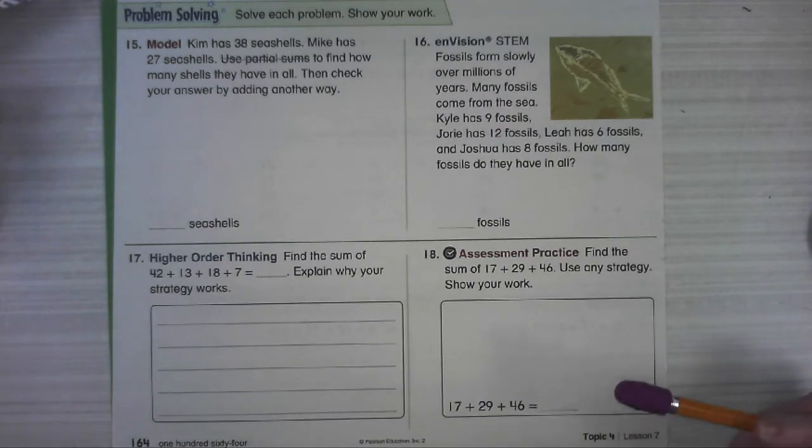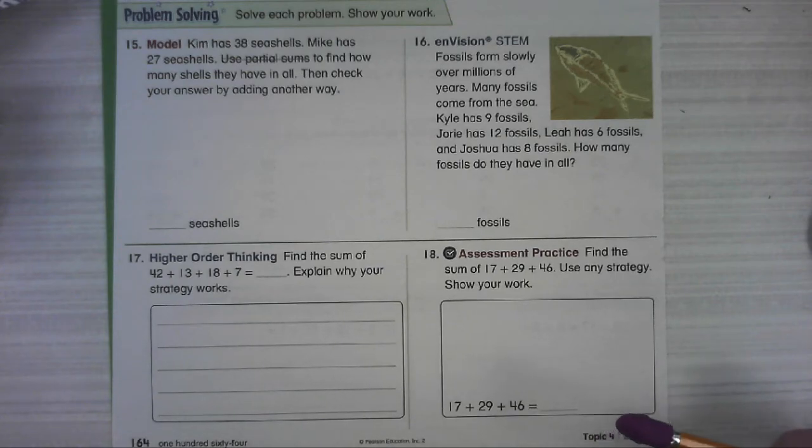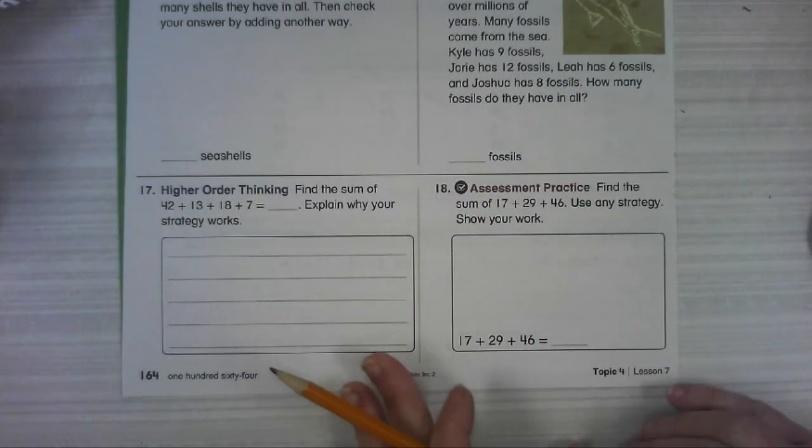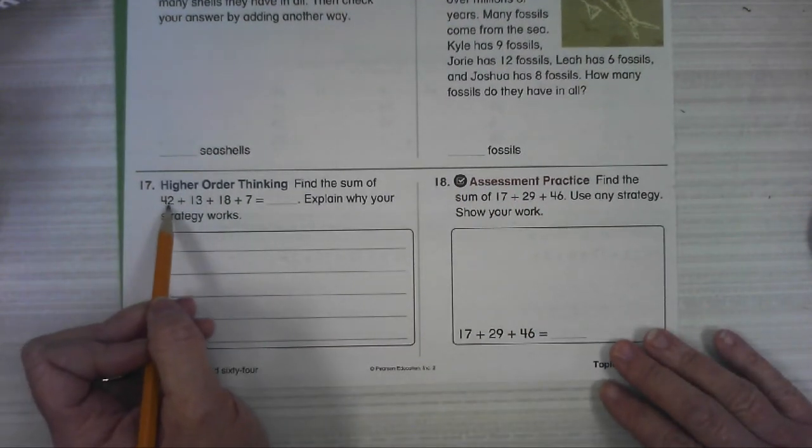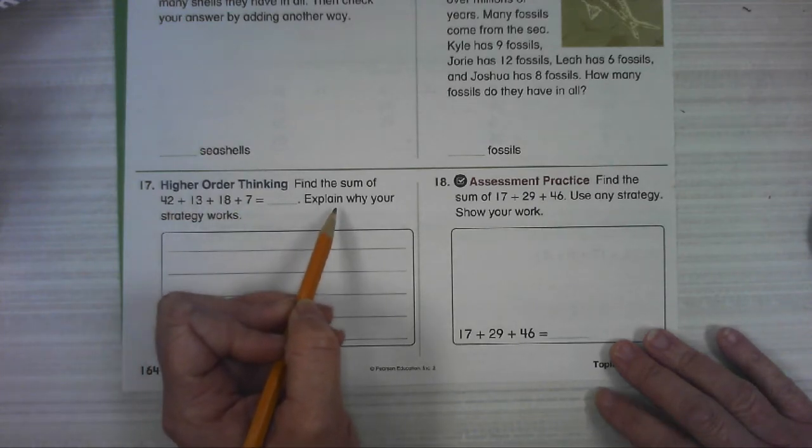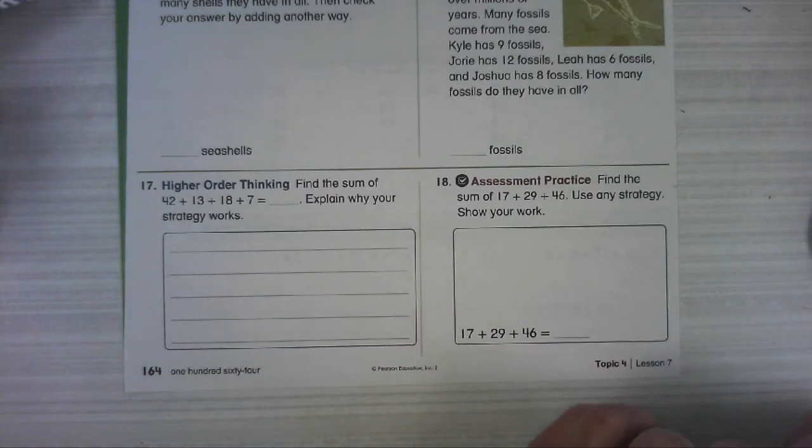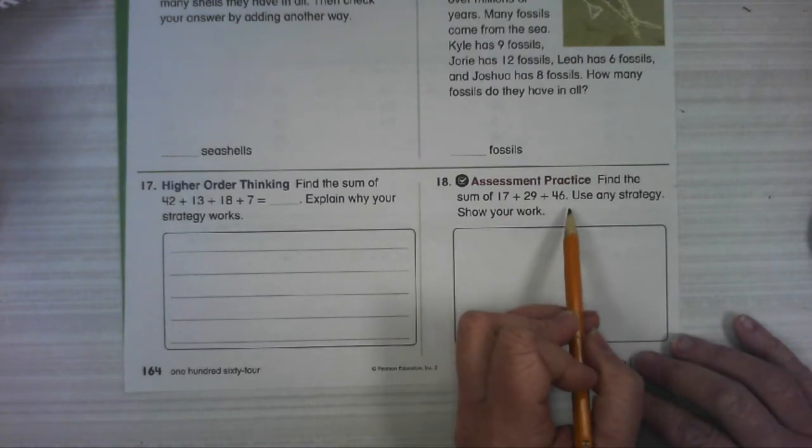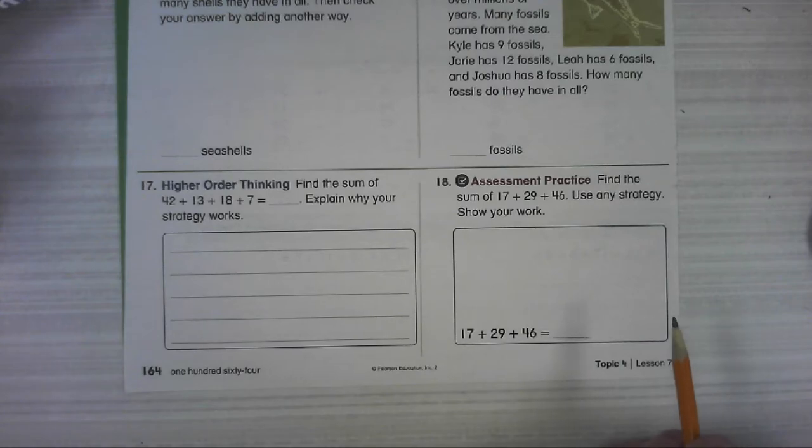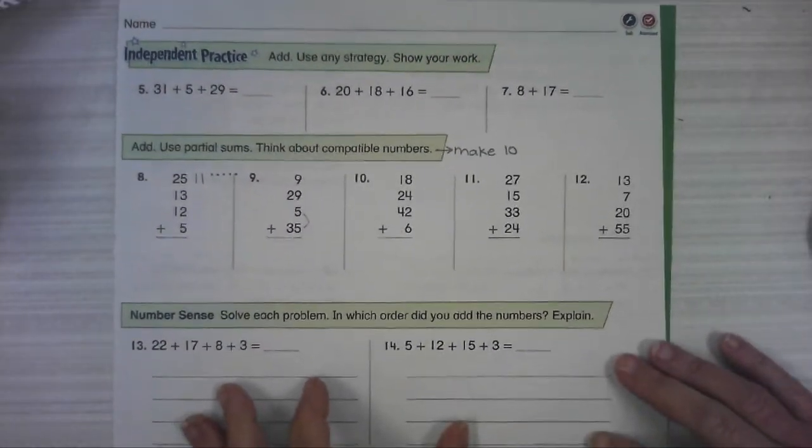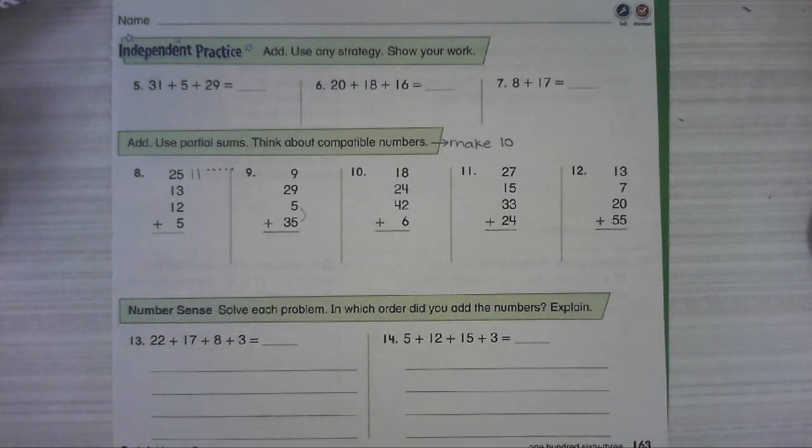You've got a stem question. Fossils form slowly over millions of years. Many fossils come from the sea. Kyle has nine fossils, Jory has 12 fossils, Leah has six fossils, and Joshua has eight fossils. How many fossils do they have in all? Find the sum of 42 plus 13 plus 18 plus 7 and explain why what you did works. And then we're going to find the sum of these three add-ins with any strategy and show your work. I know this is going to take you a little bit longer because you've got more numbers to add. Go ahead and get started and let me know if you have any questions. See you next time. Bye.